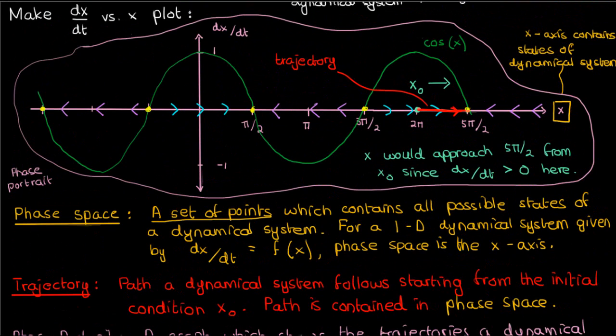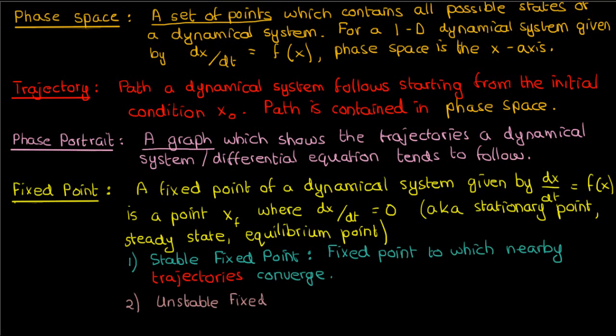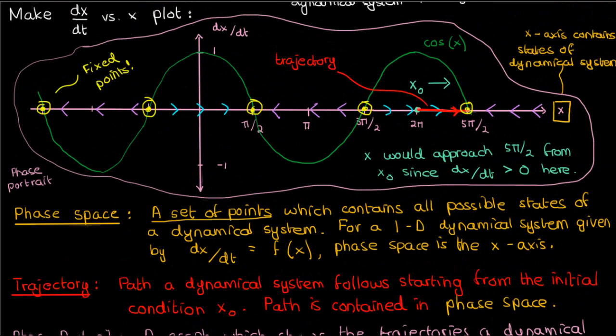As an example of fixed points, these points in the dynamical system up here are fixed points. Now there's two main types of fixed points: stable fixed points, which are fixed points where nearby trajectories or nearby states tend to converge to, and unstable fixed points from which nearby trajectories diverge. For the cos(x) dynamical system, 3π/2 would be an unstable fixed point, whereas 5π/2 would be a stable fixed point.